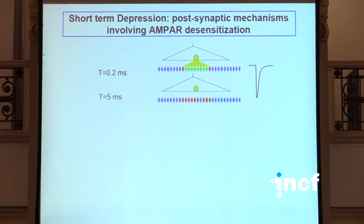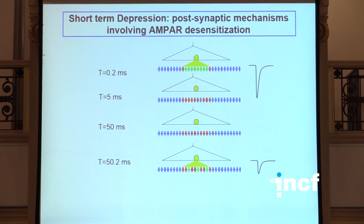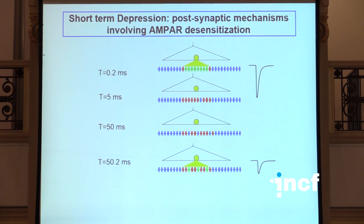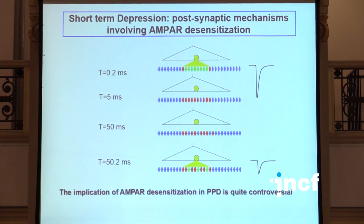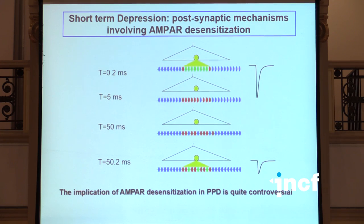This post-synaptic depression is the idea that when you release transmitter, receptors get desensitized very quickly, and because it takes them a while to recover from desensitization, if you have glutamate release on the same location only a few tens of milliseconds after, receptors are still desensitized, so you get a smaller response. The implication of receptor desensitization in post-pulse depression is a bit controversial, and we think one of the reasons for that is that what has not been taken into account in this type of reasoning is actually receptor movements.